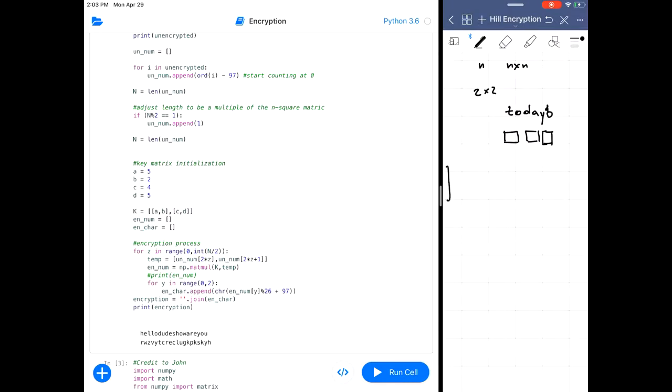We have our key matrix initializer. Over here, we have all the values which could be modified as you wish. As long as there is a modular inverse to that matrix, it will work.